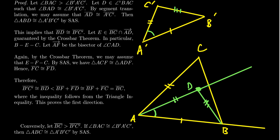The next thing we do is introduce the point of intersection between BC and ray AD. Because ray AD is interior to angle BAC, by the Crossbar Theorem there exists a point of intersection. We call that point E. By the Crossbar Theorem, since E is on segment BC, E is between B and C, as illustrated in our diagram.